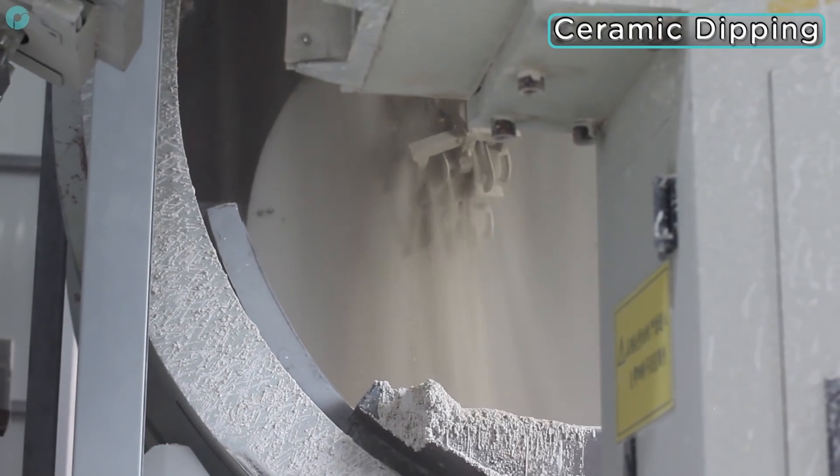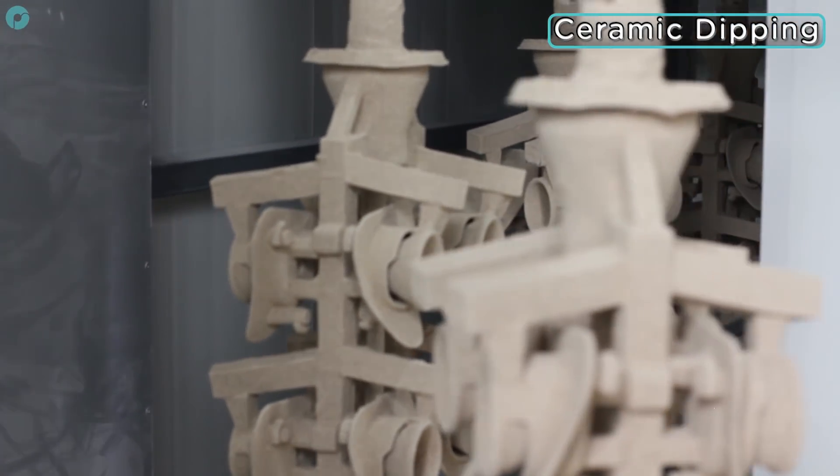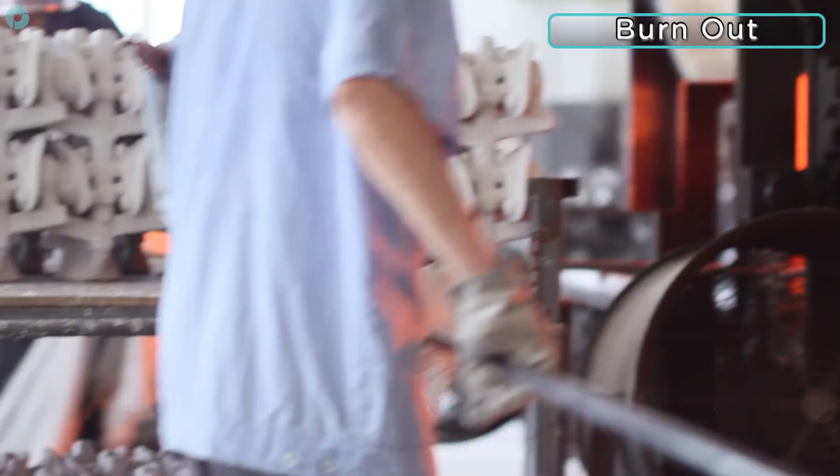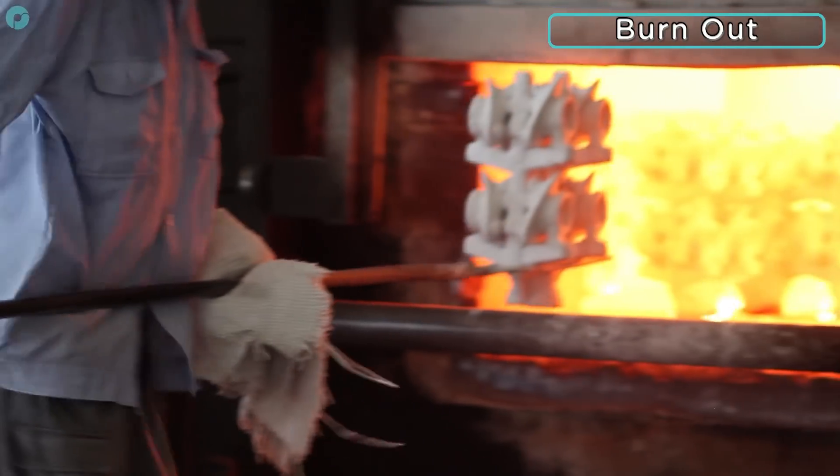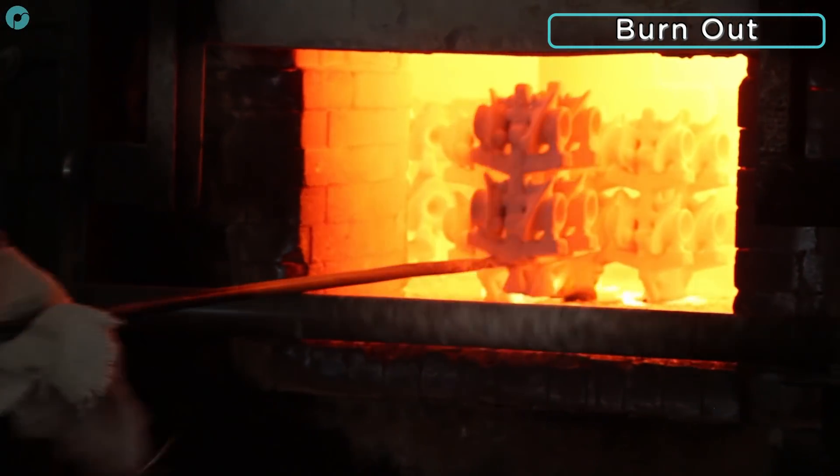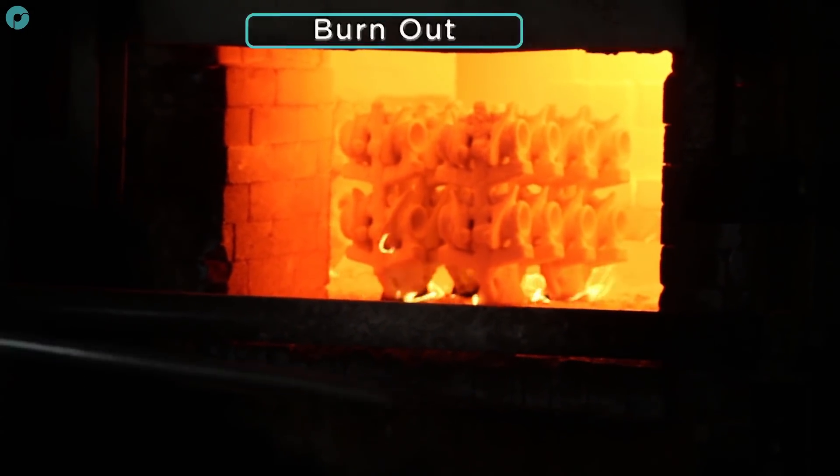The molds are then transferred to the kiln for the curing and burn out process. The molds are placed upside down in the kiln at a temperature of 900 degrees centigrade. This fires the ceramic and cures it ready for molding. The Polycast patterns are completely vaporized during this phase, leaving a clean investment mold.